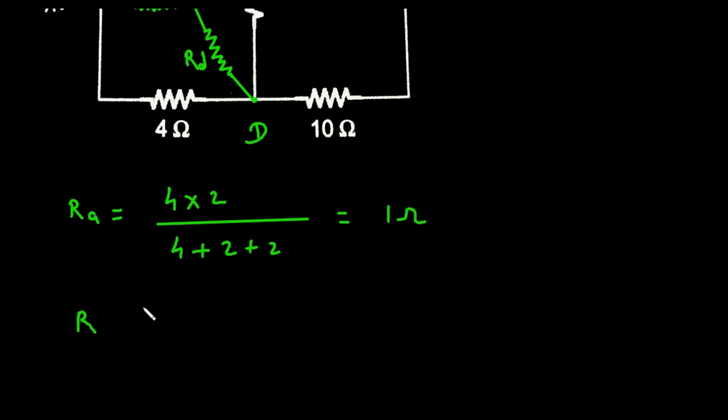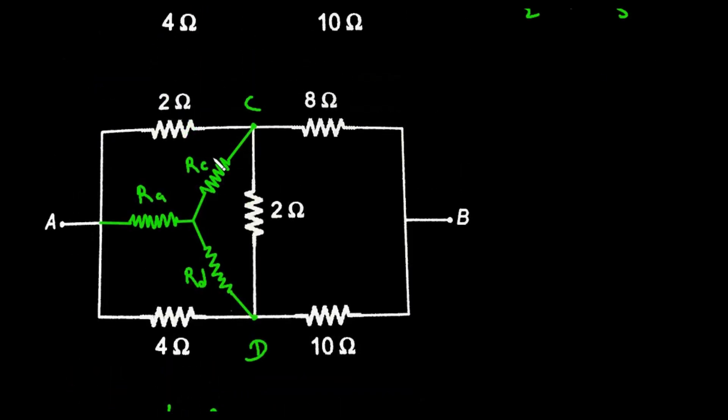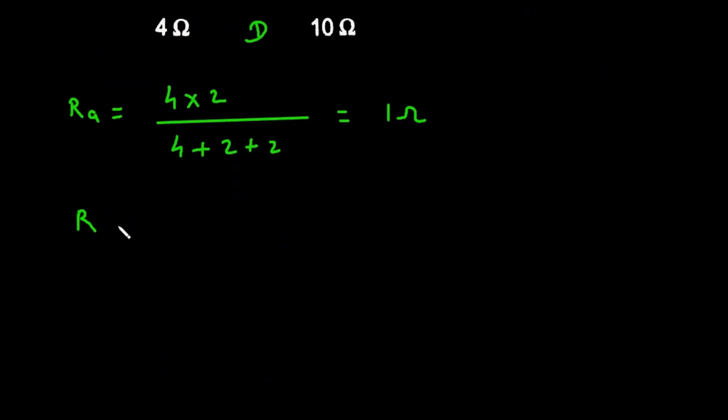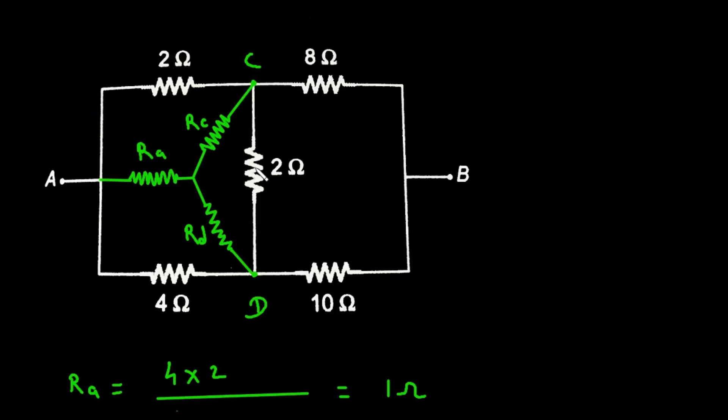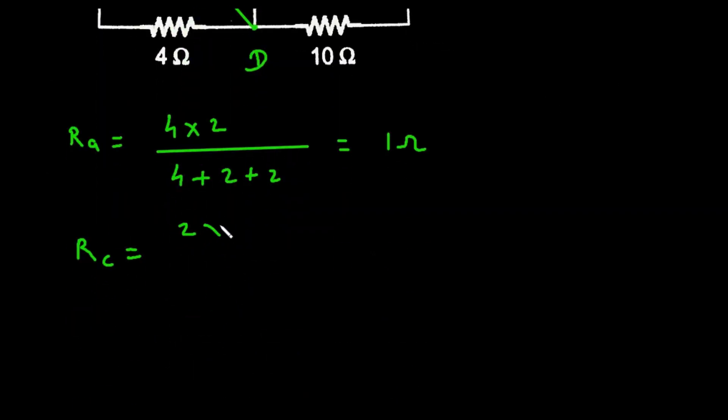Now similarly we will find R C. So R C is equal to this 2 into 2 divided by same denominator. So 2 multiplied with 2 divided by 4 plus 2 plus 2.